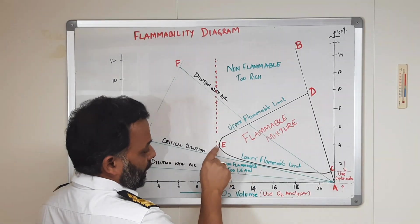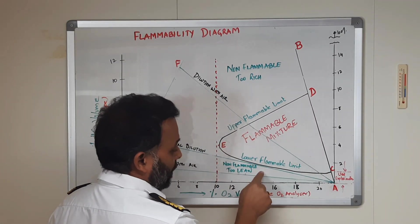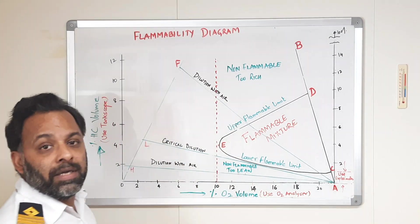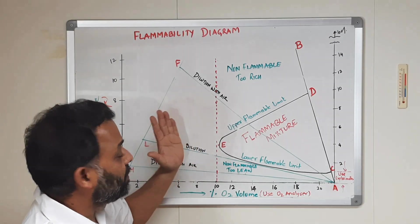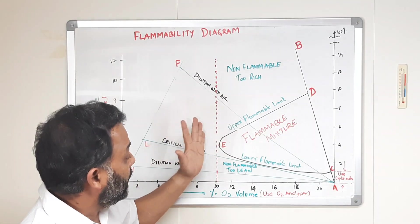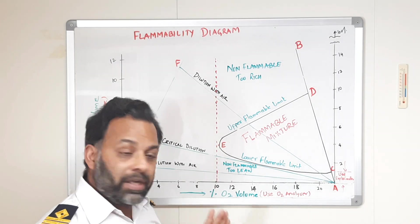And there will come a point, point E, where the UFL and the LFL will meet. Now, this is the minimum point at which there is sufficient oxygen for a fire to take place.